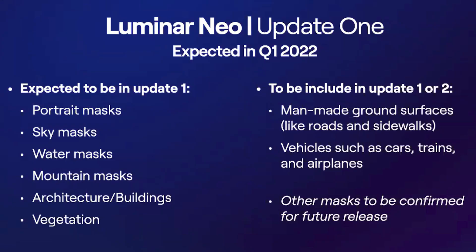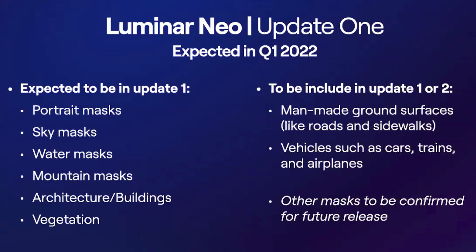In the first release of Luminar Neo software, you can expect these subject recognition masks: portrait mask, sky mask — which will replace the old sky replacement feature, so you use sky mask to replace the sky — water mask, mountains, architectural structures, and vegetation. That's what they're expecting to release in the first release of the software.